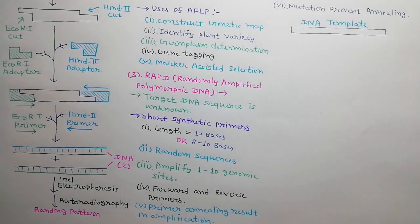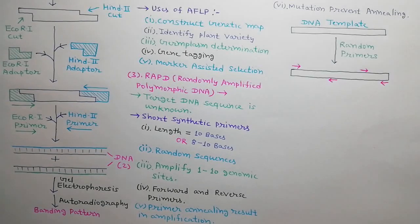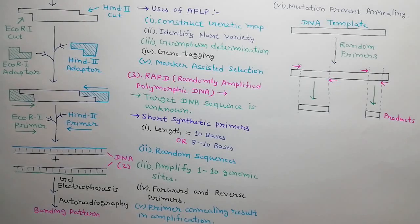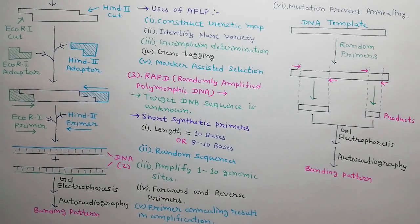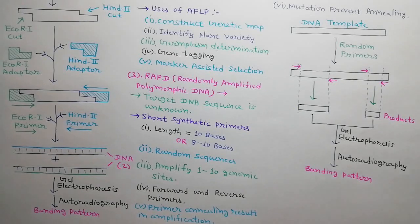Suppose, we have a DNA sample. Now, we add random primers. Suppose, they anneal at two different places. As a result, two DNA fragments with different length are formed. By using gel electrophoresis and autoradiography, bending pattern can be obtained. RAPD is used to detect genetic variations in crop species, to study phylogenetic relation between species and subspecies, to identify varieties in gene tagging and linkage mapping and in DNA fingerprinting.